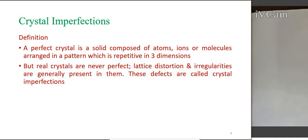What is the definition of crystal imperfection? A perfect crystal is a solid composed of atoms, ions, or molecules arranged in a pattern which is repetitive in three dimensions with a very long range order — that is an ideal perfect crystal. But real crystals are never perfect. There will be some irregularities or lattice distortion. There will be some lattice distortion or irregularities present in the material arrangement, and these defects are called crystal imperfections.